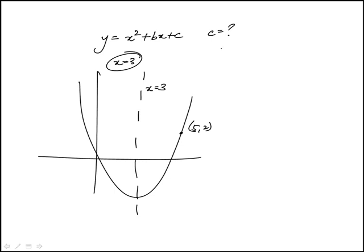So one thing I already know, the axis of symmetry is related to the coefficients here. So it's minus b over 2a. a here is 1. So I can find what b is. b is minus 6.